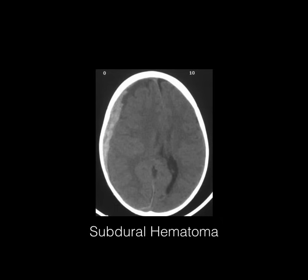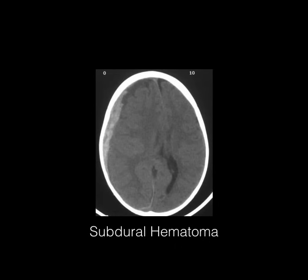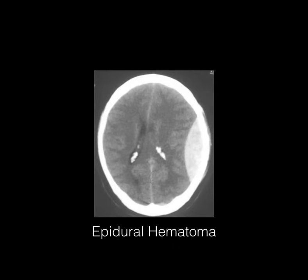Here we have a subdural hematoma — it's said to be crescent shaped and it's along the perimeter. Contrast that to an epidural hematoma which is lens shaped. The etiology is very high yield: with an epidural hematoma it's a rupture of the middle meningeal artery, but with the subdural hematoma it's the bridging veins that are involved.